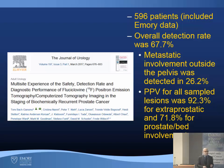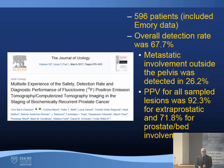A 596-patient multi-site trial published in Journal of Urology, including our Emory data, found an overall detection rate of nearly 68%. Metastasis outside the pelvis was detected in about a quarter of patients. The positive predictive value for all sampled lesions was very high for extra-prostatic disease and about 72% for prostate bed involvement, validating our data at other centers.